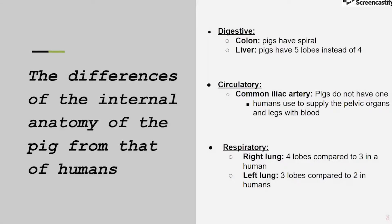The last pre-lab question asks for the differences in internal anatomy between the pig and humans. In the digestive system, the colon and liver are different. Pigs have a spiral colon, whereas humans have transverse, ascending and descending colons. In a pig, the liver has five lobes instead of four in humans. In the circulatory system, pigs do not have a common iliac artery, which humans have to supply the pelvic organs and legs with blood. In the respiratory system, pigs have four lobes in their right lung compared to three in humans, and their left lung has three lobes compared to two in humans.